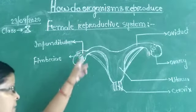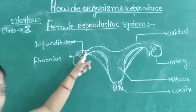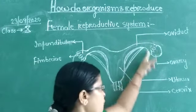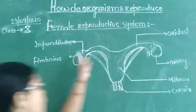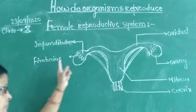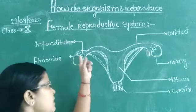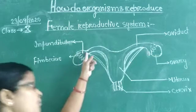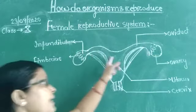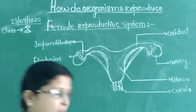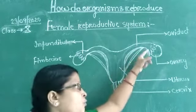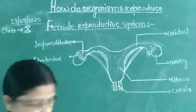There is a funnel-shaped structure on each side, and that funnel-shaped structure is called the infundibulum. The infundibulum leads to a tube-type structure, and that structure is called the oviduct or fallopian tube.